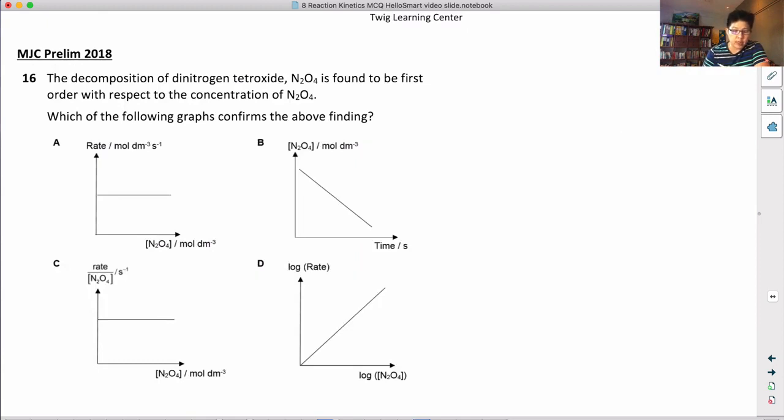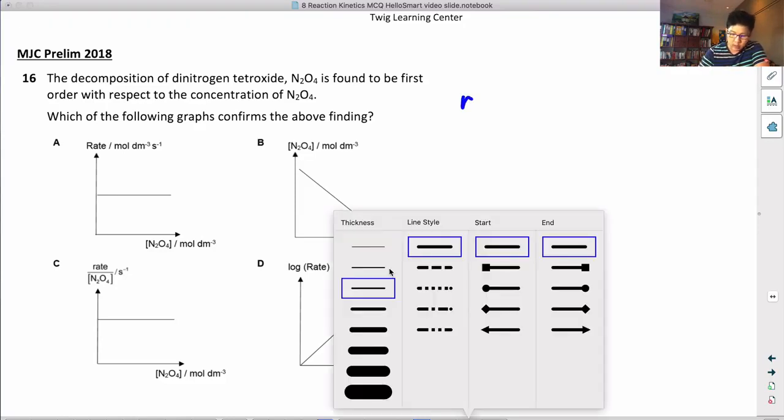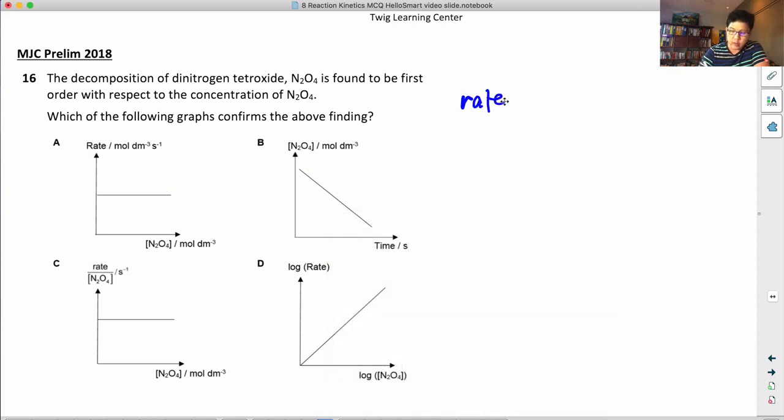Okay, the decomposition of dinitrogen tetraoxide is found to be first-order with respect to the concentration of N2O4. I'm going to write the rate equation: rate equals K times N2O4. Which of the following confirms this finding? So rate and concentration of N2O4 are proportional, so this graph should look like that, not a straight line.